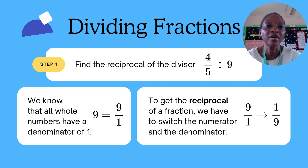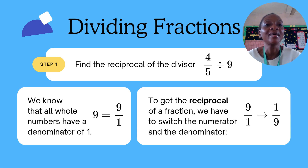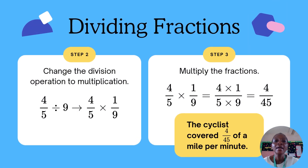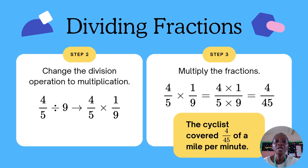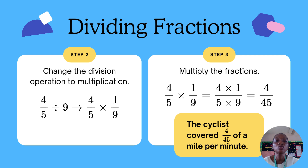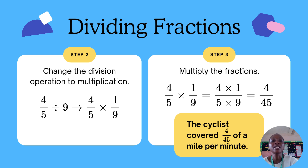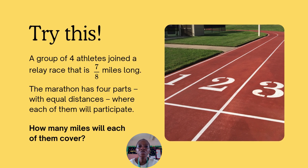To get the reciprocal of a fraction, you switch the numbers: the numerator becomes the denominator and the denominator becomes the numerator. So nine over one becomes one over nine. The next step is to change the division sign to multiplication since the numbers have been swapped. It becomes four over five times one over nine. Multiply the numerators: four times one gives four. Multiply the denominators: five times nine gives forty-five. The cyclist covered four over forty-five of a mile per minute.